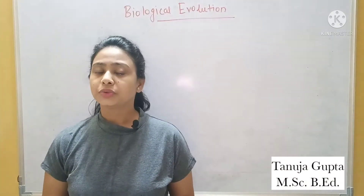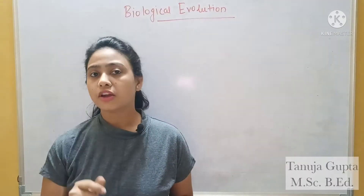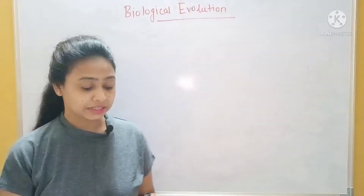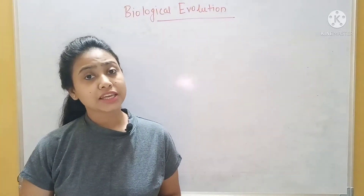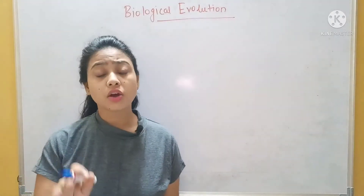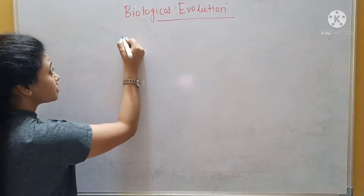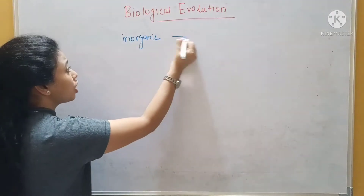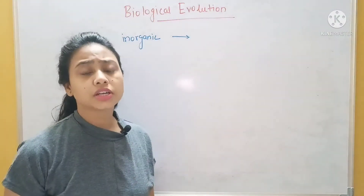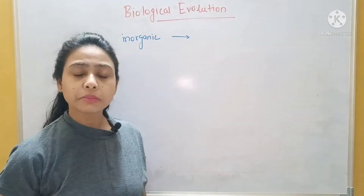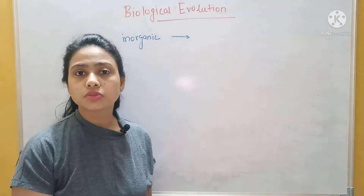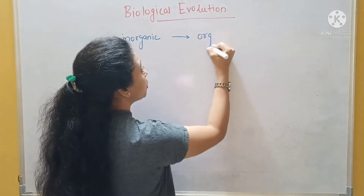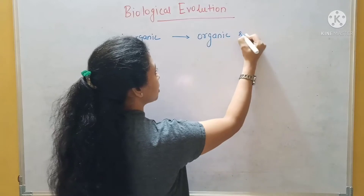Hello everyone, today we will take the biology evolution. After chemical evolution, we have seen here that chemical evolution involved inorganic substances, due to certain environmental conditions like reducing atmosphere and certain elements present, with energy sources — all these inorganic substances were converted into organic substances.